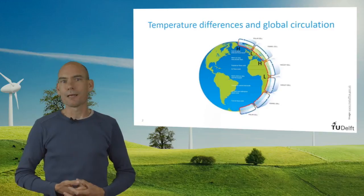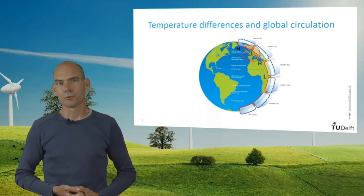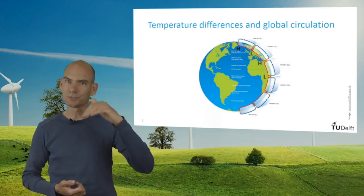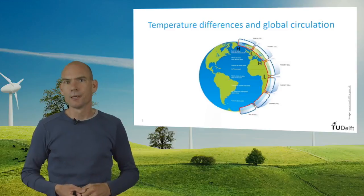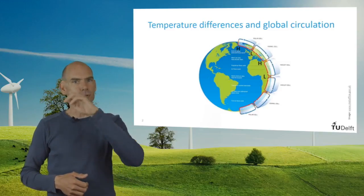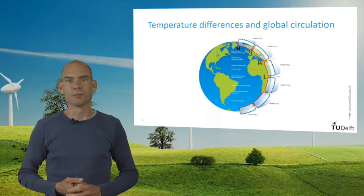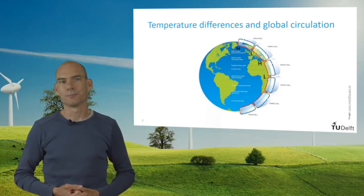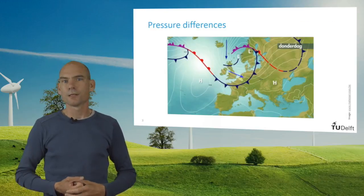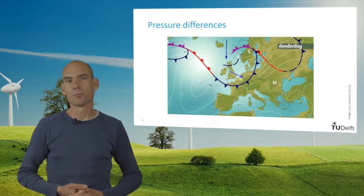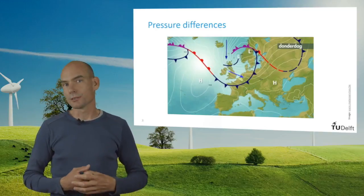At points where the air rises, it leads to a low pressure region in the lower atmosphere. Where the air sinks, the lower atmosphere becomes a high pressure region. Because of the size of the circulation cells, the northwest of Europe typically experiences low pressure regions.